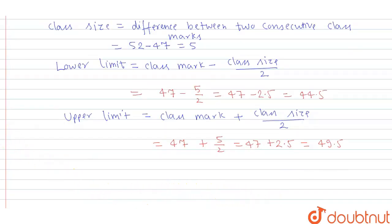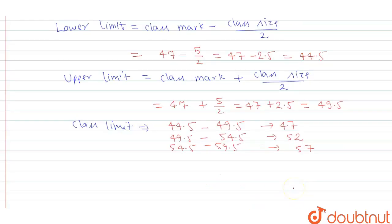So now we can solve. So here class limit, class limit is what? So here 44.5 to 49.5, it is a class limit for 47. Similarly 49.5 to 54.5, it is for 52. Similarly, here 54.5 to 59.5, it is for 57. So here we can write also 59.5 to 64.5, it is for 62 and so on. So it will be our true class limit.